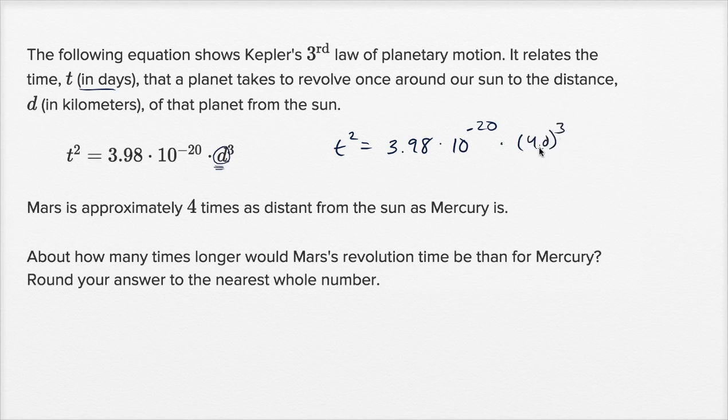Well, 4d to the third power, four is going to be the same thing. I could rewrite that as 4 to the third times d to the third. 4 to the third power, that's 16 times 4, that's 64. So it's going to be the same thing as 64 times d to the third power.